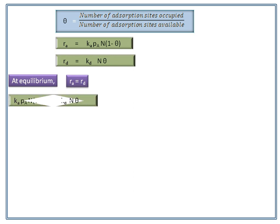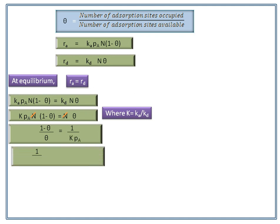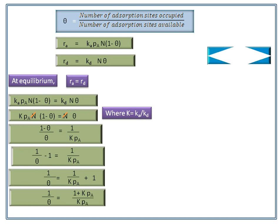Setting Ra equal to Rd: Ka × Pa × N × (1 − θ) = Kd × N × θ. Dividing both sides by N and bringing Kd to the left, we define a new equilibrium constant K = Ka / Kd. The equation becomes K × Pa × (1 − θ) = θ, which rearranges to (1 − θ) / θ = 1 / (K×P). Solving for theta gives: θ = KP / (1 + KP).